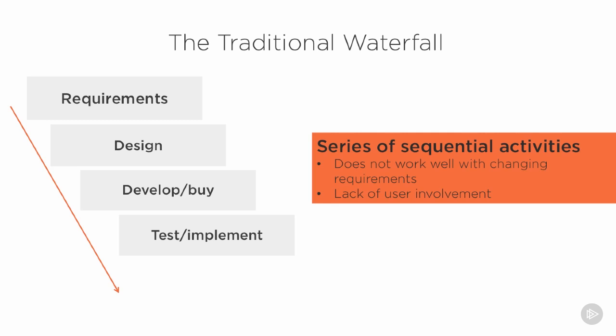We want to see if our system is resilient enough to continue working correctly even if it's under attack. Then we work on the implementation of the system, which looks at the configuration, the training of users, the documentation, and putting in place the operational guidelines for how the system will operate.